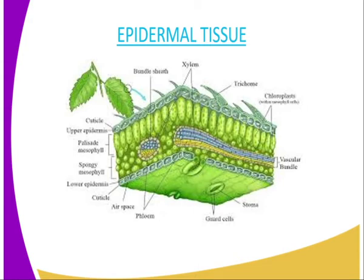We also have the cuticle, and generally the cuticle is the shiny substructure on the upper or lower surface of the leaf. The cuticle can be found on either side of the leaf. We also have the spongy mesophyll layer, and we also have the palisade mesophyll. So that is the diagrammatic representation of the epidermal tissue.